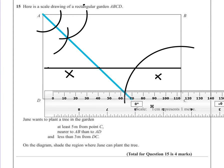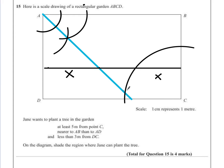that line is going to be representing 3 metres away from DC. Now it has to be less than 3 metres, so anything above that line is no go.